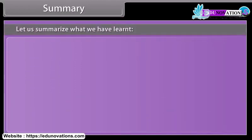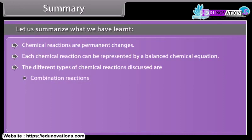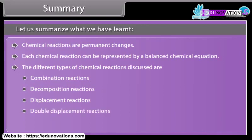Summary. Let us summarize what we have learned. Chemical reactions are permanent changes. Each chemical reaction can be represented by a balanced chemical equation. The different types of chemical reactions discussed are combination reactions, decomposition reactions, displacement reactions, double displacement reactions, and redox reactions.